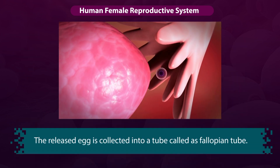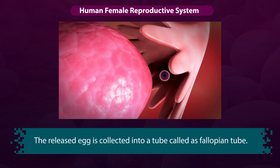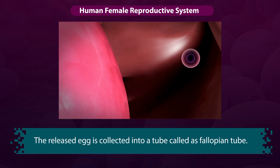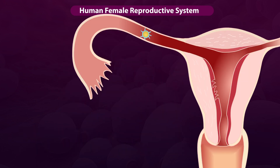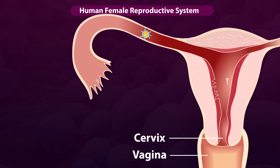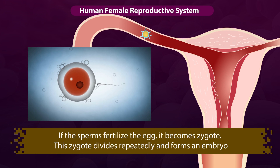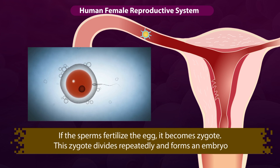The released egg is collected into a tube called the fallopian tubule. The sperms deposited by the male in the vagina during sexual intercourse travel through the cervix, uterus, and reach the egg present in the fallopian tubule. If the sperm fertilizes the egg, it becomes a zygote.